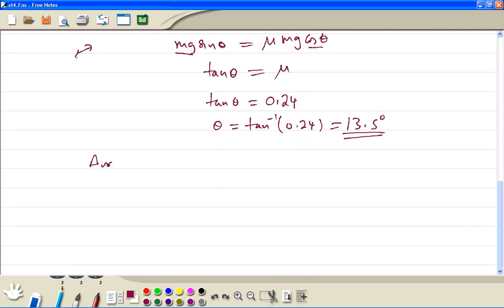So angle of sliding is 13.5 and the angle of toppling is 18.5. So the angle of sliding is less than the angle of toppling, so the cylinder will slide.